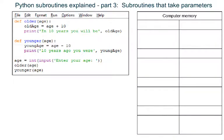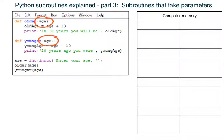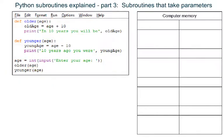This program has two subroutines. Notice that at the start of each subroutine there is the name of a variable in the brackets — this is called a parameter. Notice as well that at the place where the subroutines are used, there is also the name of a variable in the brackets. Watch carefully so you understand how this program works.